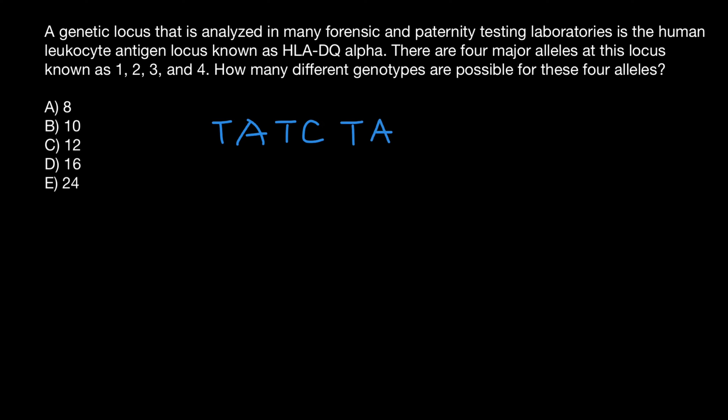For example, TATC two times, TATC two times, and some people we may see it repeat one time, two times, and other people three times. So that is the definition of the allele: that in certain locus, some people have one number of repeats of the core sequence.